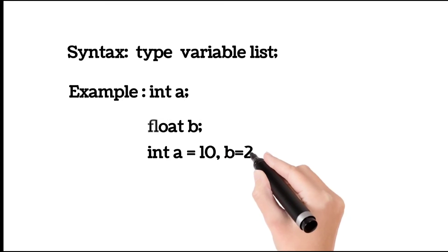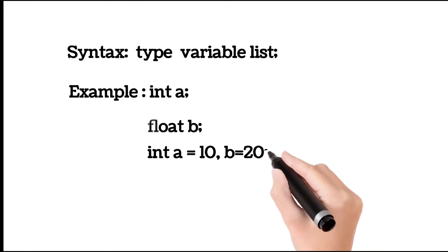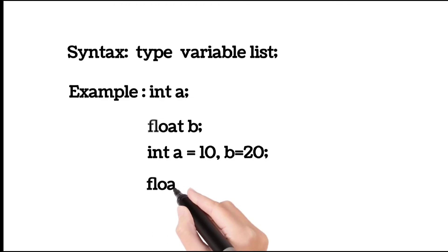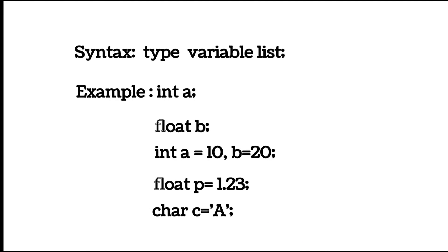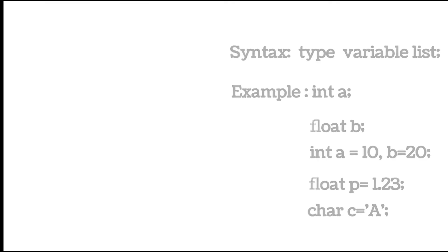Here we have two variables a and b and in this variable we have assigned value 10 or 20 using assignment operator, so this is the initialization of variable. Next float p equals 1.23, so p also assigned a value. Next char c, c is a variable of char data type, also assigned A. This is the declaration and initialization of variable.